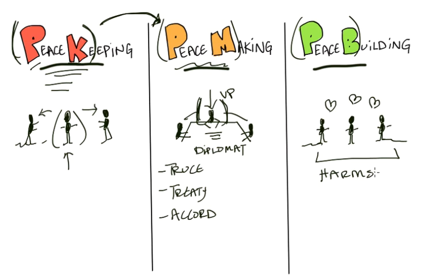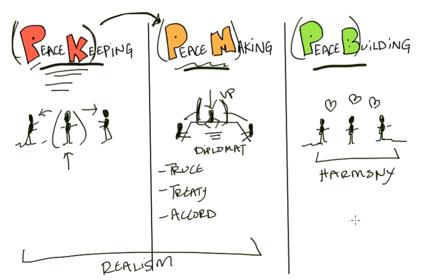Now if we want to bring realism and liberalism into this: the realist would say that peacekeeping and peacemaking are about as far as you can go. Liberalists would say that those two would be the first steps, but peacebuilding is the ultimate ideal — that long-lasting, sustainable peace.